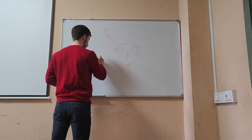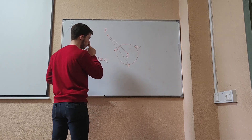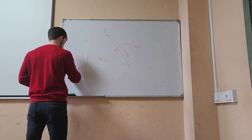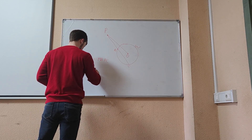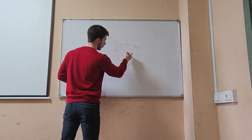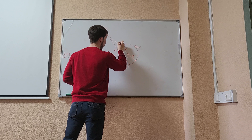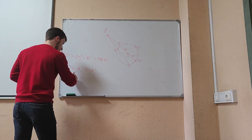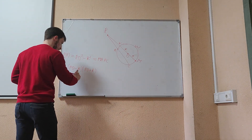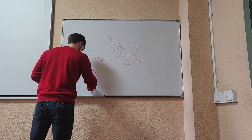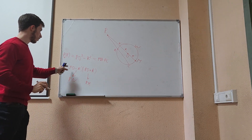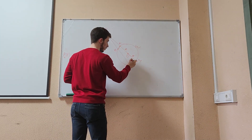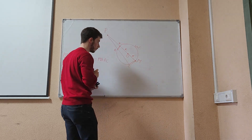For any secant line, PO squared minus R squared equals PO minus R times PO plus R. Let's call PO minus R as PN, and PO plus R as PM. So the power of point P equals PN times PM.